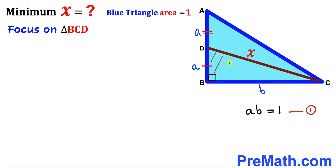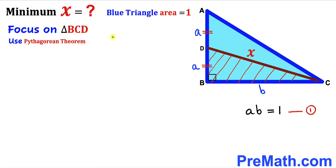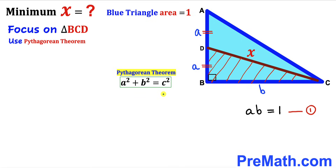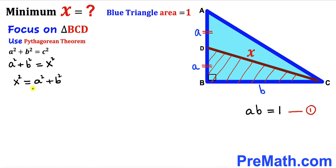Now we focus on right triangle BCD, whose side lengths are lowercase a, lowercase b, and hypotenuse x. Applying the Pythagorean theorem — a squared plus b squared equals c squared — in our case the hypotenuse is x and the two legs are a and b. So we get a squared plus b squared equals x squared, which we can write as x squared equals a squared plus b squared.